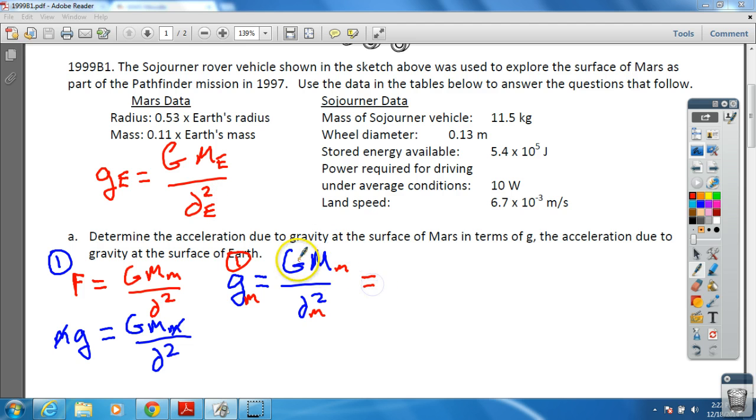At this point we're going to go ahead and start plugging some things in, so we know big G stays. The mass of Mars is really 0.11 times the Earth mass, so we're going to put 0.11 times the mass of the Earth.